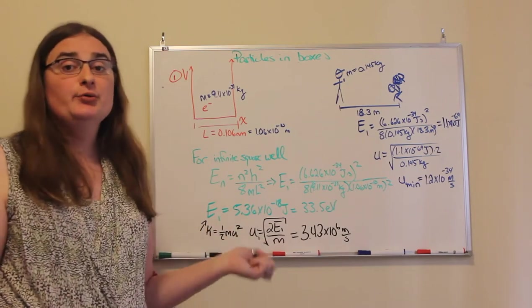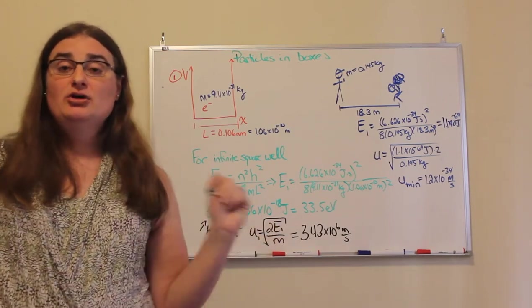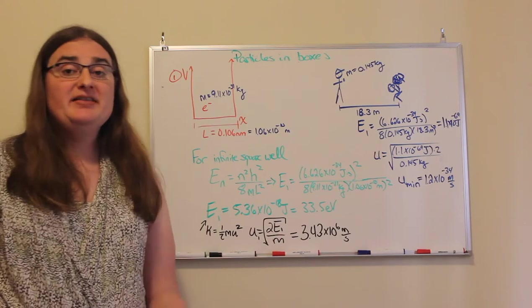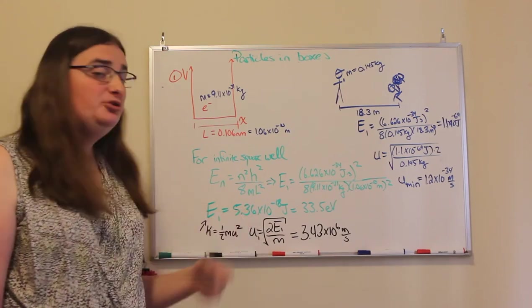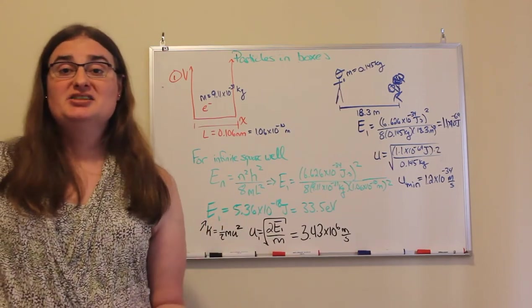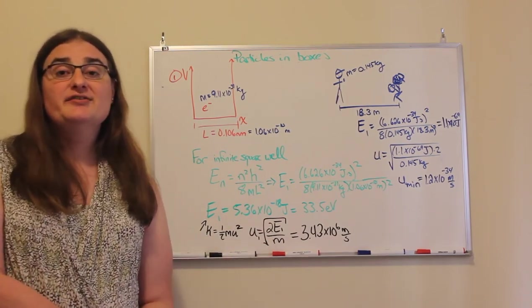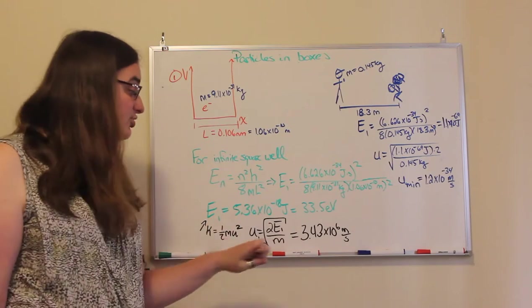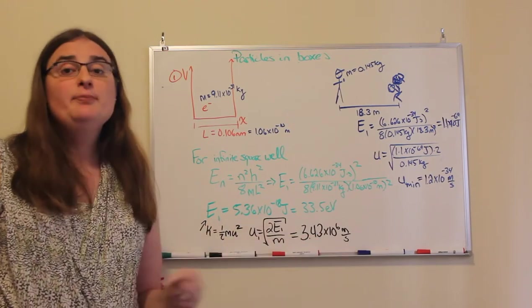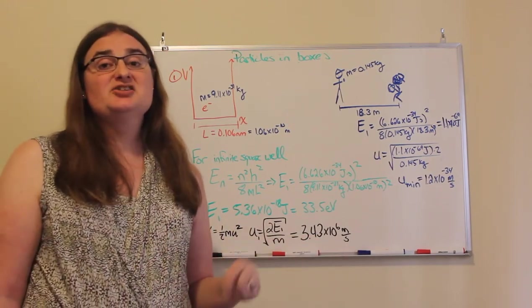The speed would be the square root of 2 times that energy divided by the mass. So if I take 2 times 5.36 times 10 to the minus 18 joules, divide by 9.11 times 10 to the negative 31 kilograms, and take the square root of that, I get 3.43 times 10 to the 6 meters per second.